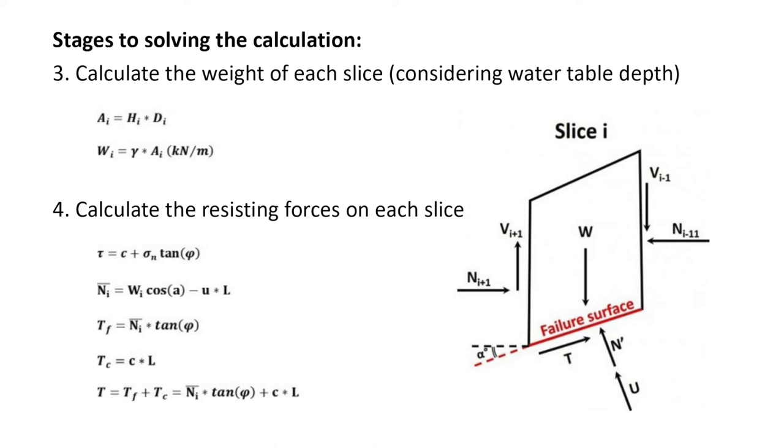The calculation uses the Mohr-Coulomb failure criterion to calculate the shear resistance of each slice. This equation uses the cohesion, normal force N and friction angle. The normal effective force N subscript i is then calculated for each slice, considering the weight, angle, pore water pressure and arc length of the slice base.